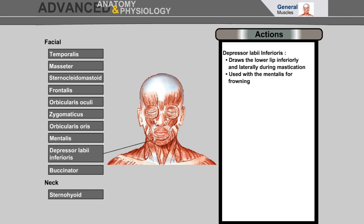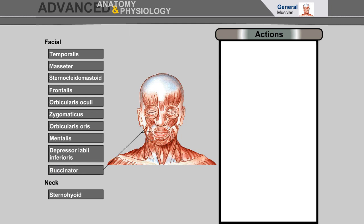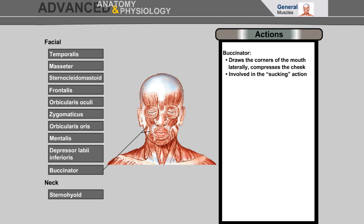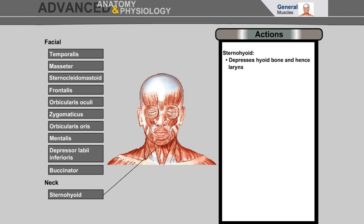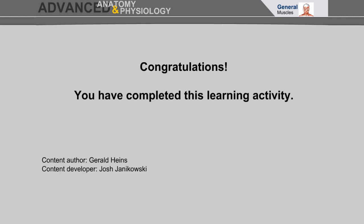Depressor labii inferioris draws the lower lip inferiorly and laterally during mastication, and is used with mentalis for frowning. Buccinator draws the corners of the mouth laterally and compresses the cheek, involved in the sucking action. Sternohyoid depresses the hyoid bone and hence the larynx. Congratulations, you have completed this learning activity on the superficial skeletal muscles.